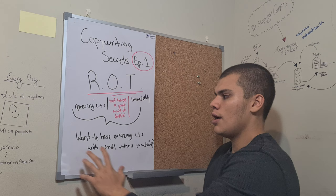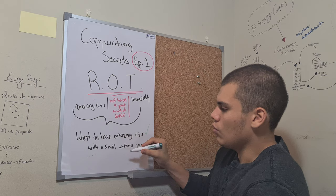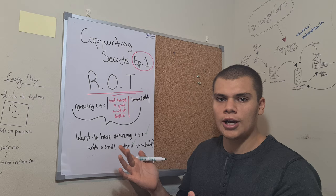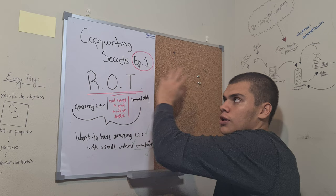And we're showing results, that is amazing click-through rate. What is my objection? I don't have a big audience, so with a small audience. And how long is it gonna take? When am I gonna see results? Immediately. Okay, so we just included the ROT formula into our title. This is gonna be the title of this video. Hope you guys have learned, hope you guys have enjoyed. Short video, first episode of the copywriting series.